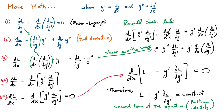Here is the proof for the Beltrami identity. Equation one is the Euler-Lagrange equation, which we want to solve to obtain y of x. Equation two is the full derivative of our Lagrangian with respect to x, expanded via the chain rule. Since L depends only on y and y' (no explicit x), there is no partial derivative term with respect to x directly. We use the Euler-Lagrange equation to eliminate matching terms from equation two. The first term in the full derivative matches exactly the Euler-Lagrange expression, so we substitute and eliminate it using the green-highlighted terms.